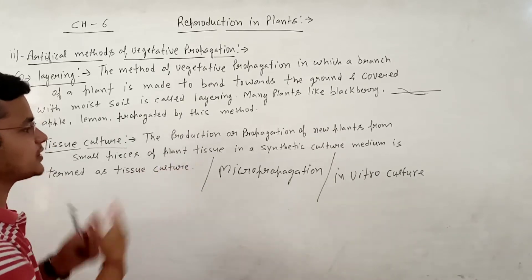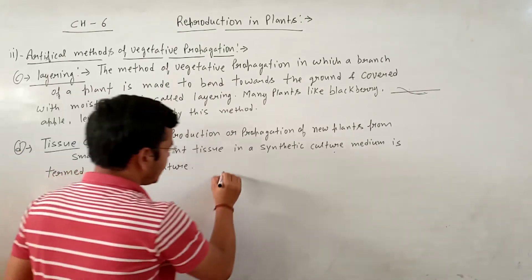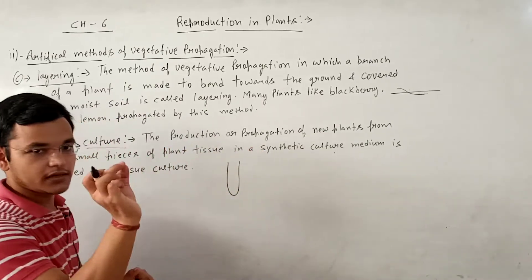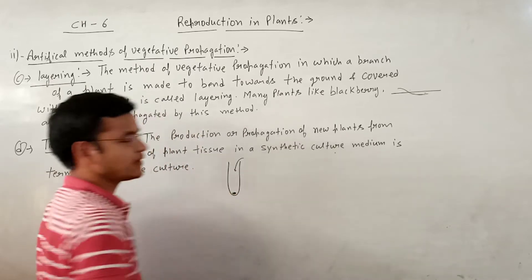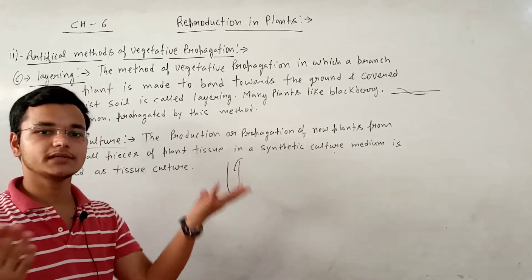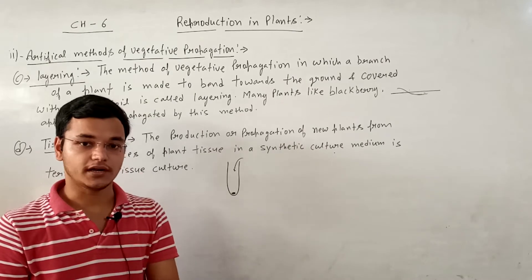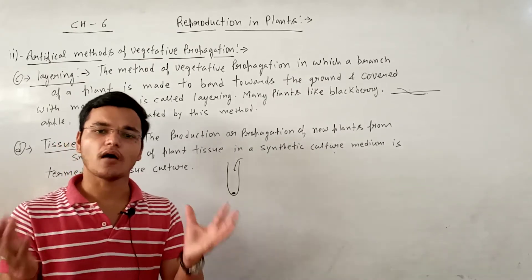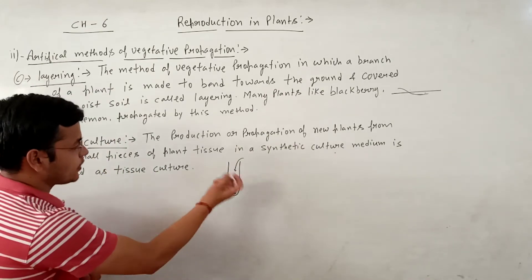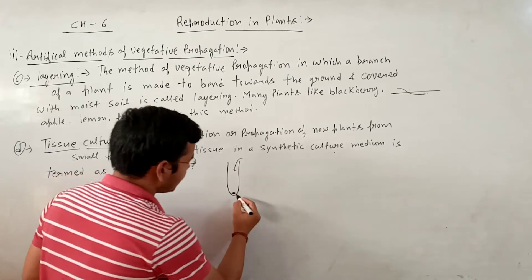अब ये process कैसे proceed होगी? Tissue culture हम कैसे perform करेंगे. Plant की किसी एक part, जहाँ rapid growth होती है, वहाँ से एक mass of tissue को हमने collect किया. उस tissue को एक test tube में collect कर लिया. So, before इस experiment को करने से पहले, हम अपने सभी equipment को sterilize करेंगे, क्योंकि ये in vitro condition में, lab condition में हो रही है, तो sterilization बहुत important है - bacteria, virus, जो भी microbes present हैं उन्हें deactivate कर देना ताकि वो cultural medium को harm ना करें. तो एक test tube में हमने plant के maximum growth वाले part को put किया - इसको हम कहते हैं explant.